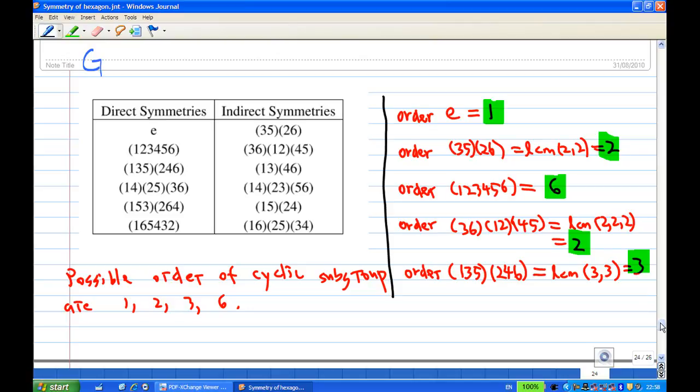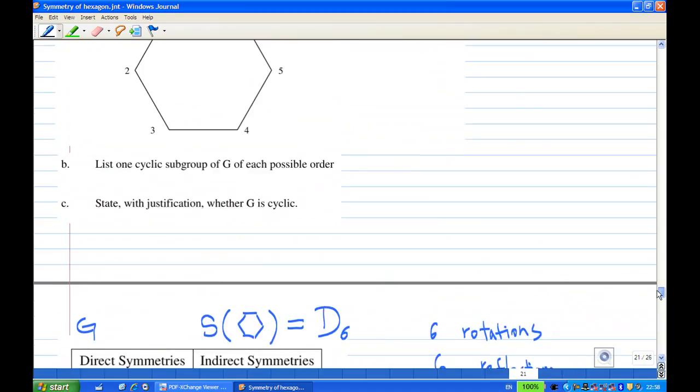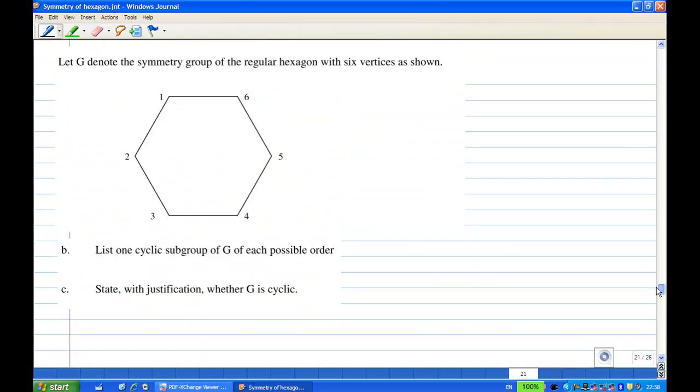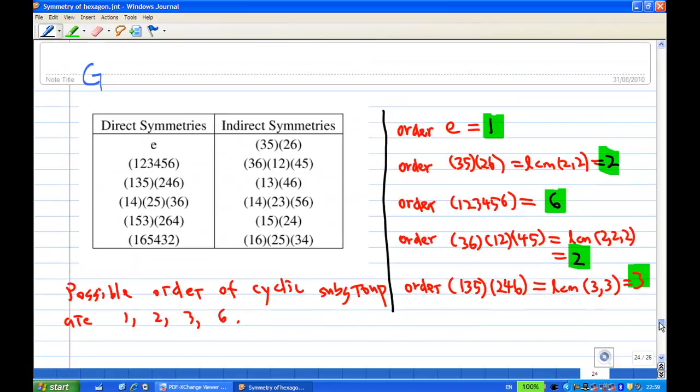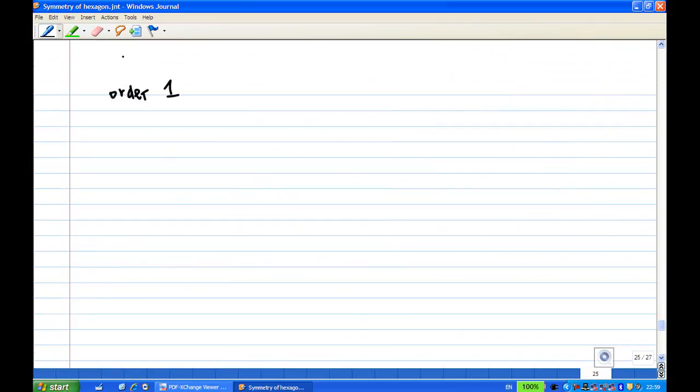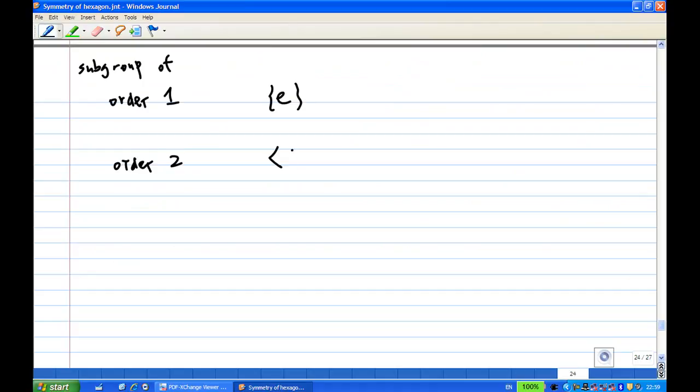Based on the question, they ask you to list out the possibility. List one cyclic subgroup of G for each possible order. So I must list out the possible cyclic subgroups. Subgroup of order 1 is {E}. Of order 2, you can have (3,5)(2,6), so the subgroup generated by (3,5)(2,6), which consists of E and (3,5)(2,6).